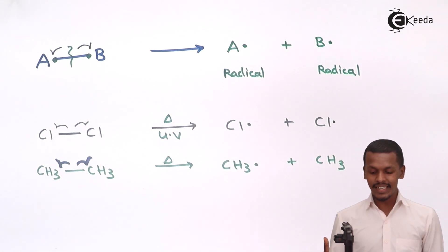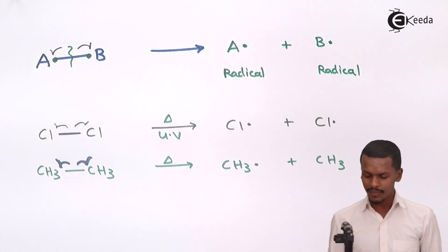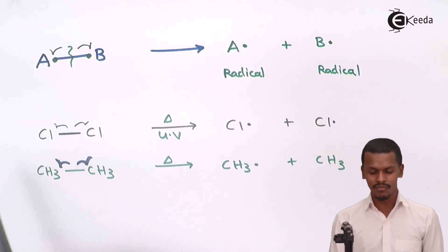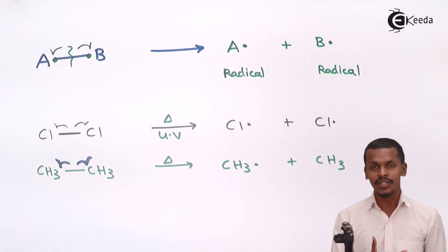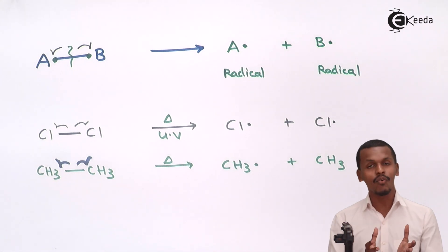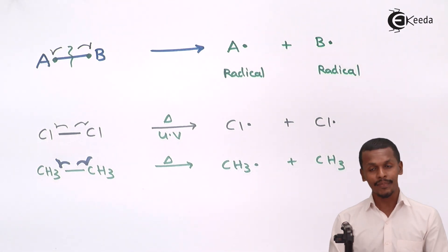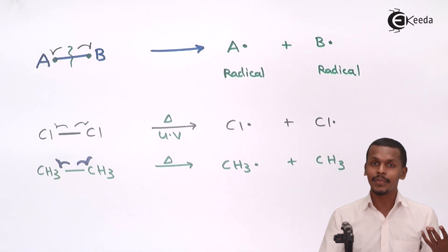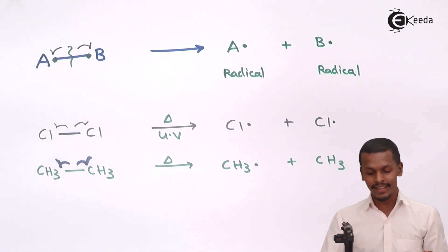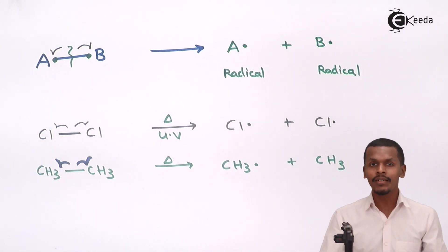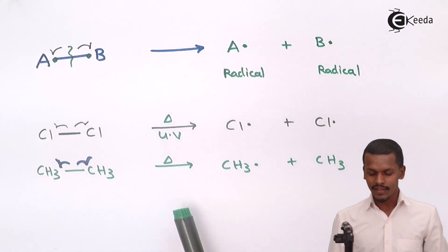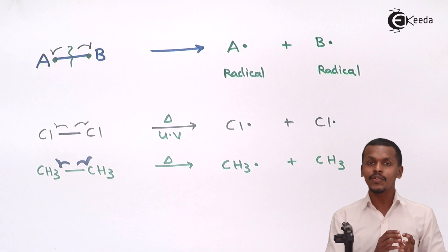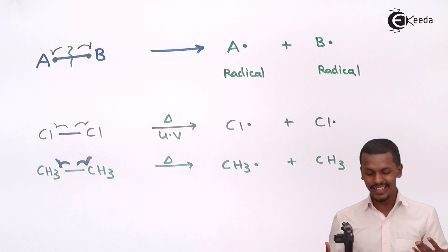Homolytic fission occurs because of sunlight or high temperature, which causes the molecules to form radicals. Additionally, when a reactant undergoes homolytic fission in a solvent, we use non-polar solvents. All the examples discussed are possible in a non-polar solvent where the reaction occurs.